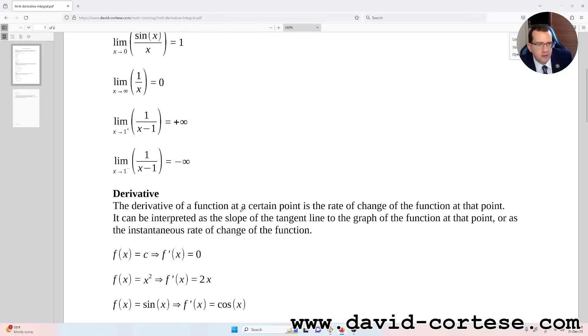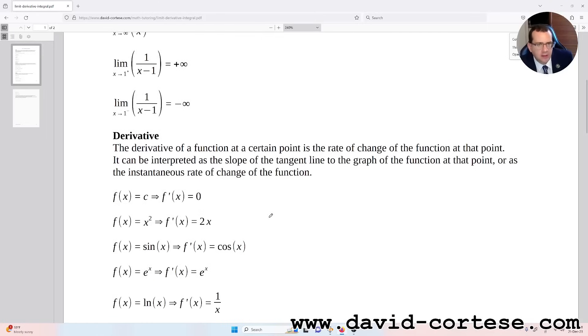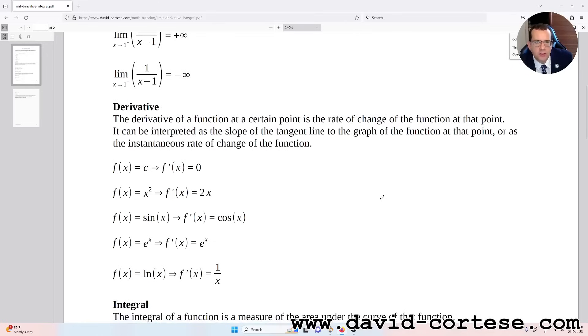The derivative of a function at a certain point is the rate of change of the function at that point. It can be interpreted as the slope of the tangent line to the graph of the function at that point, or as the instantaneous rate of change of the function.